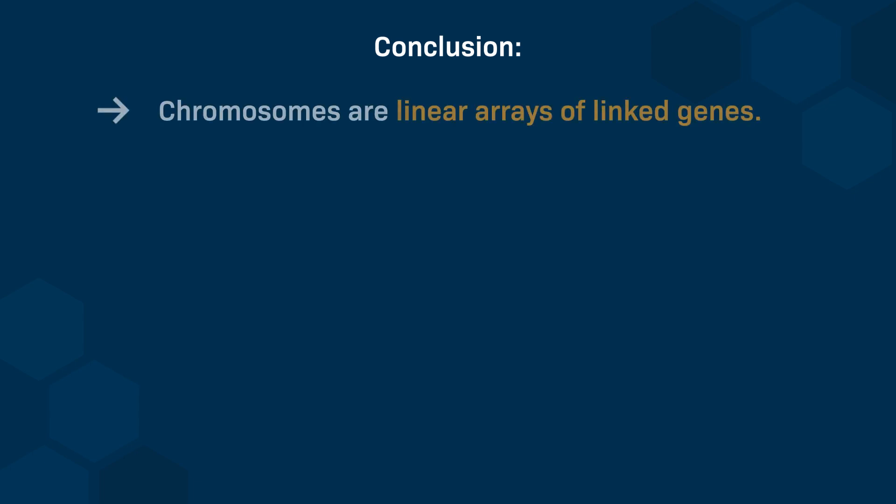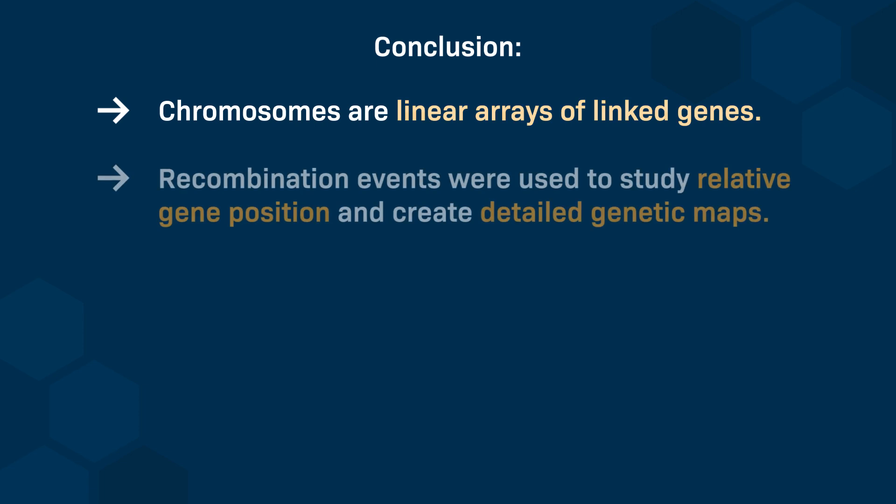In conclusion, based on these experiments, we know that chromosomes are a linear array of linked genes. Studying recombination events between these linked genes helps to determine their relative positions and allows us to create detailed genetic maps of different chromosomes.